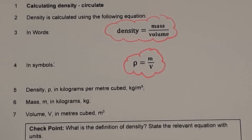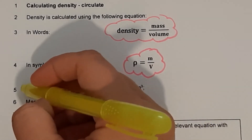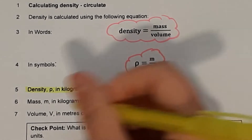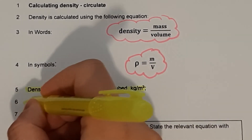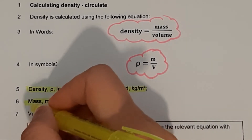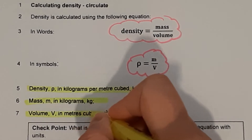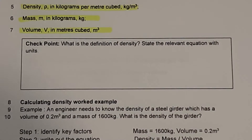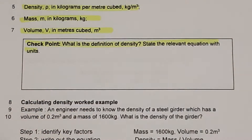Density — rho is the symbol — is measured in kilograms per metres cubed. Mass is lowercase m in kilograms, and volume is capital V in metres cubed. Checkpoint question: what is the definition of density? State the relevant equation with units. Pause the video whilst you answer this question.